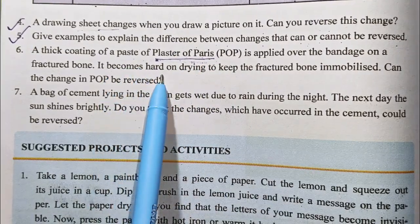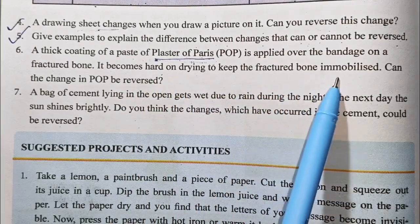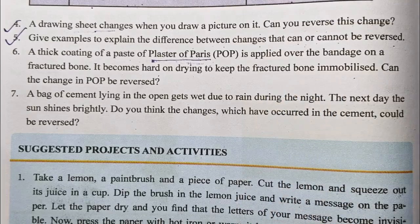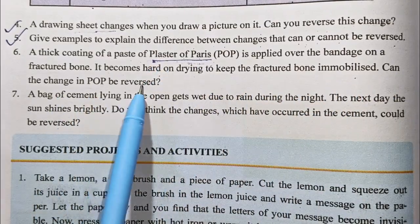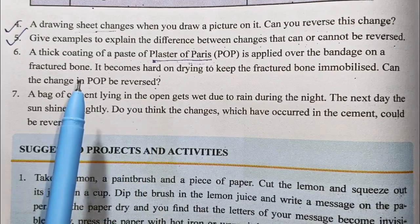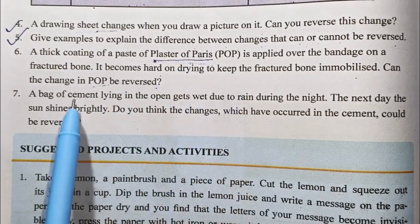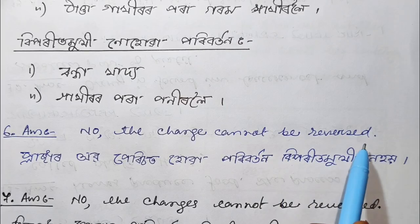It becomes hard on drying to keep the fracture bone immobilized. It will change in shape when it has dried and set. No, the change cannot be reversed.